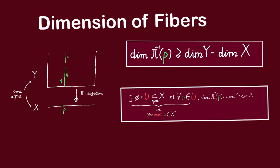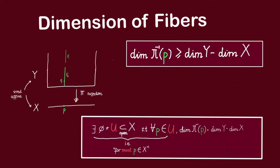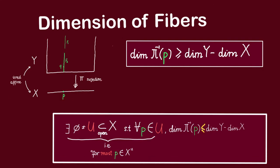So in this video, we're going to construct a non-empty open subset U of X such that for every point P in U, the dimension of the fiber over P is equal to dimension of Y minus dimension of X. Since we have established that this dimension is at least equal to dimension of Y minus dimension of X, it suffices to construct a set U such that for every point P in U, the dimension of the fiber over P is less than or equal to dimension of Y minus dimension of X. And that is what we will do.